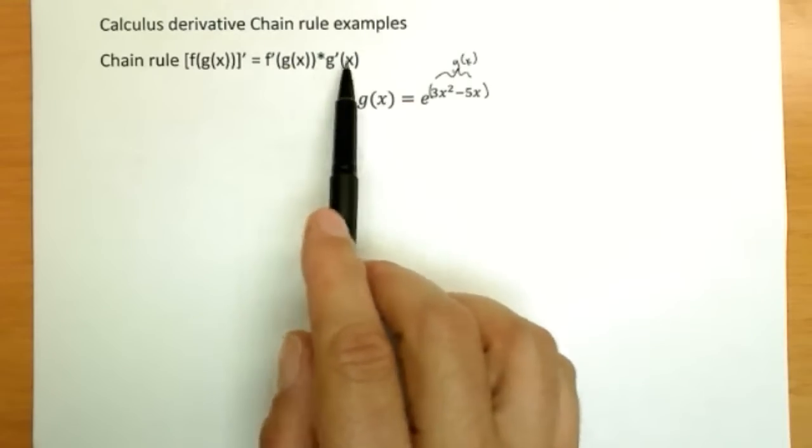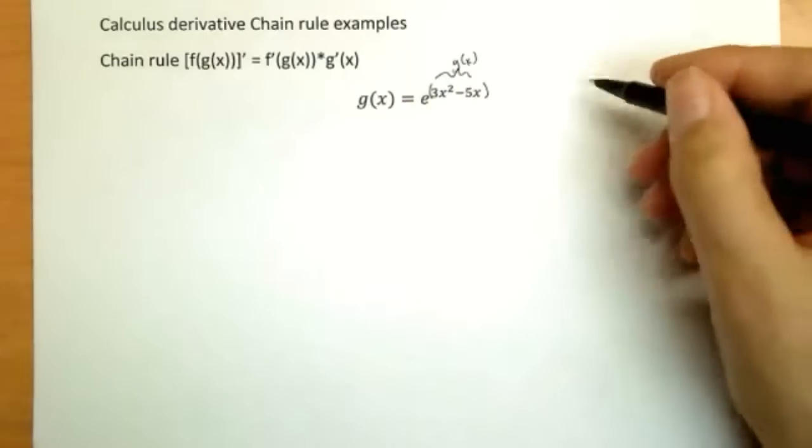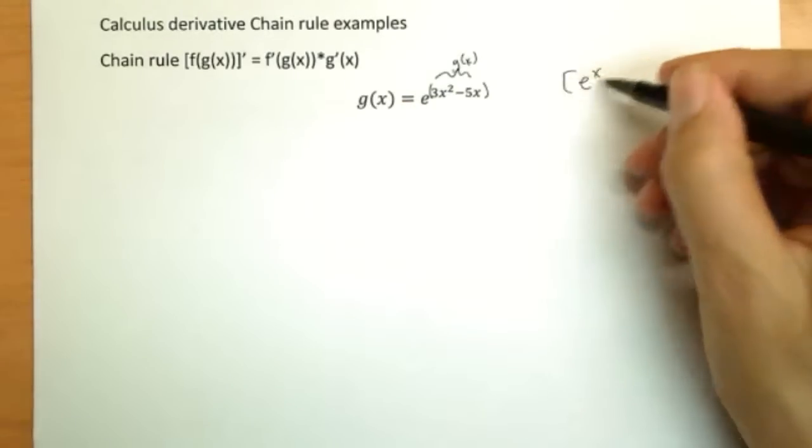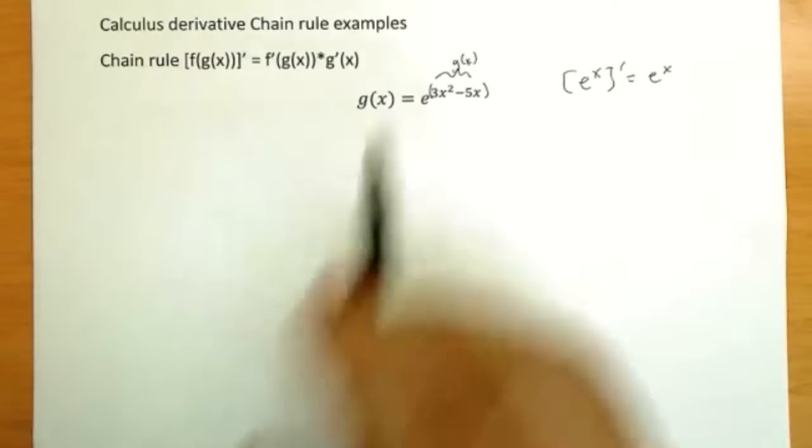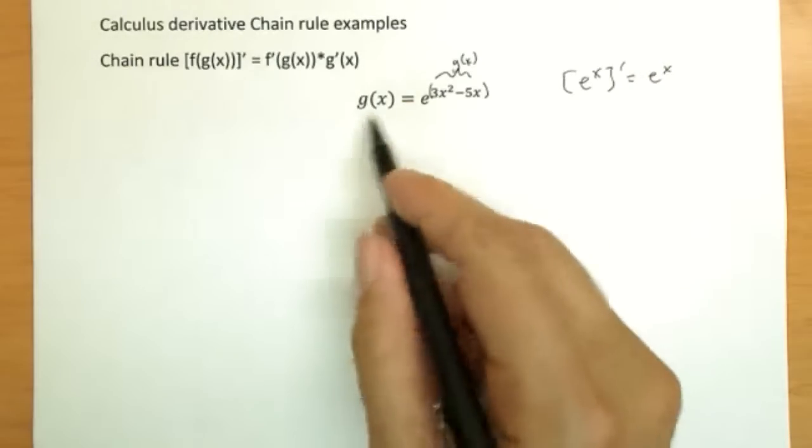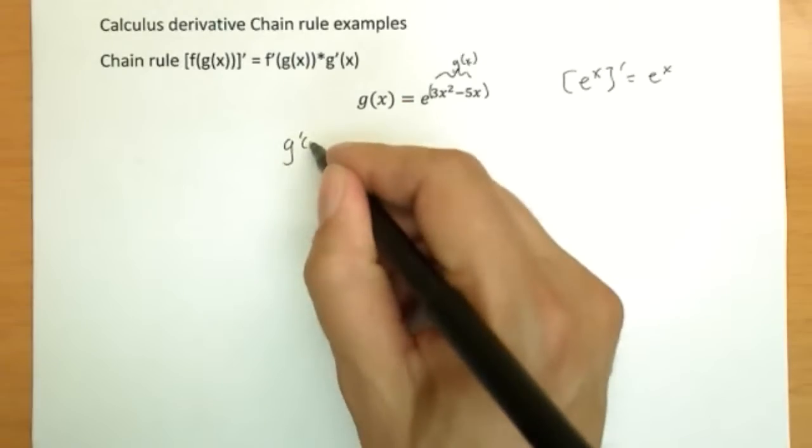So my outside function is e to the g of x, and e to x's derivative, as a quick review, is e to the x—doesn't change. So as we're doing this, the first part here, f prime times g of x, so we'll write g prime of x equals...